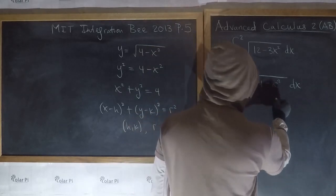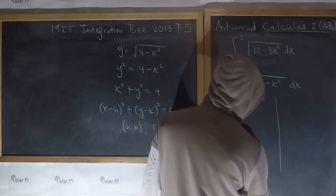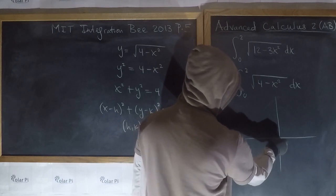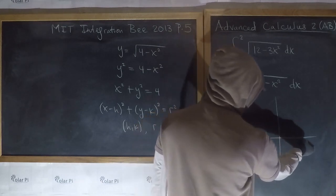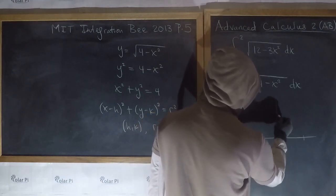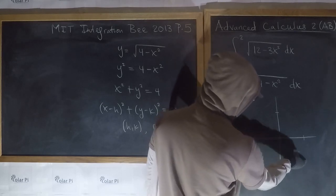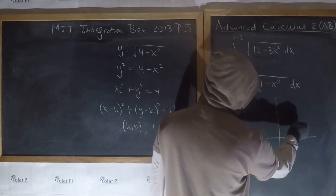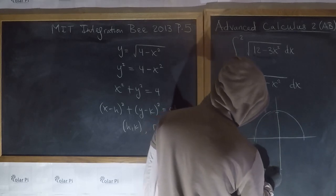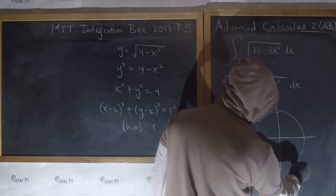Looking at this, since four is two squared, the radius of this circle is two, and it's centered at the origin. So centered at the origin, going radially two in every direction, we draw a circle like this.